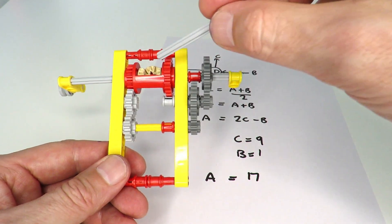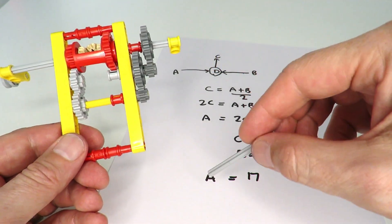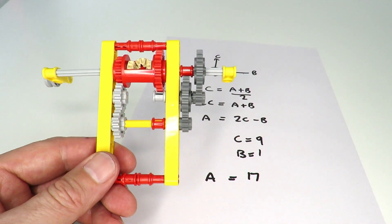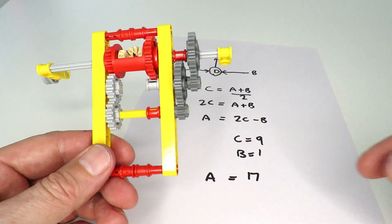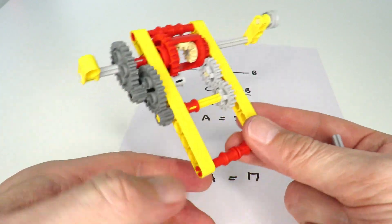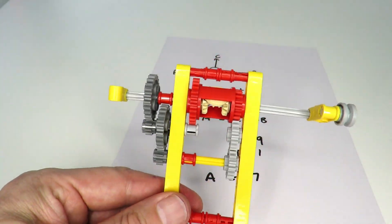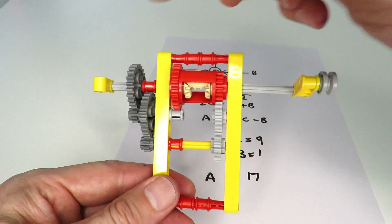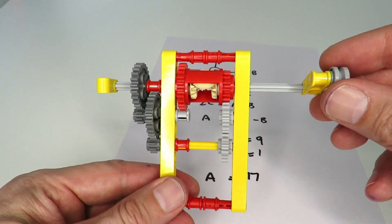So that gives an overall ratio of nine to one between B and C, and then according to the equation, A should turn around 17 times. Now, it's easier to illustrate that by turning this around. Turning the handle 17 times should give us one revolution on the left there.